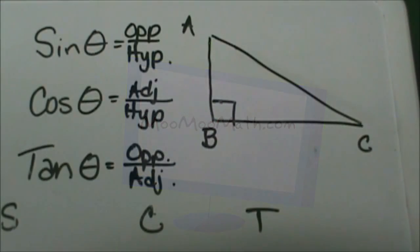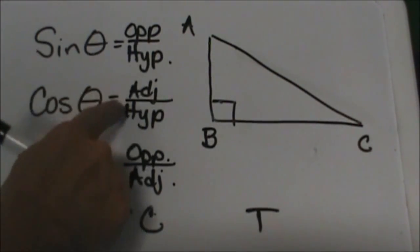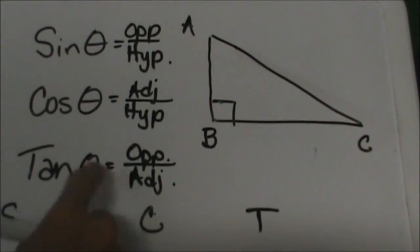These are the ratios you're going to need to memorize: sine is opposite over hypotenuse, cosine is adjacent over hypotenuse, and tangent is opposite over adjacent.